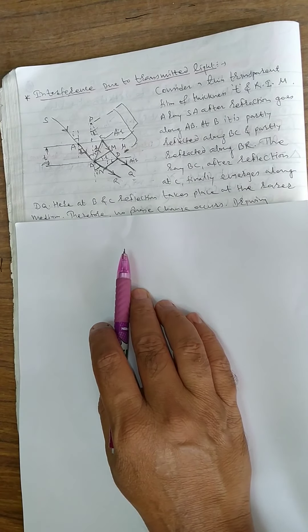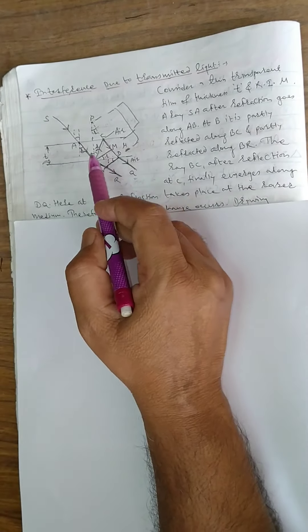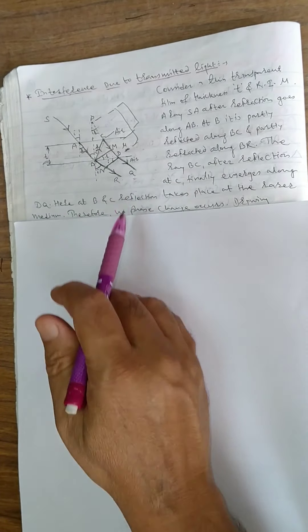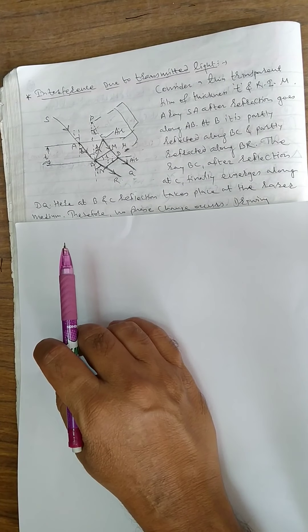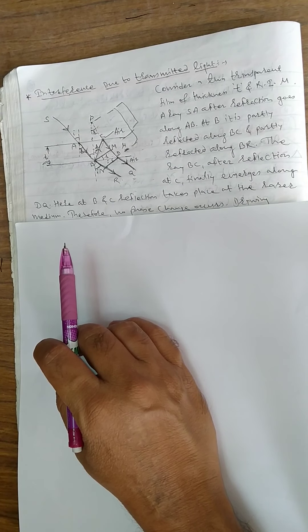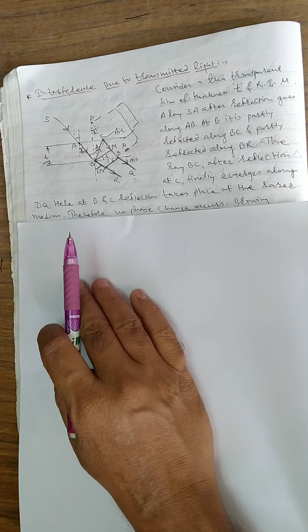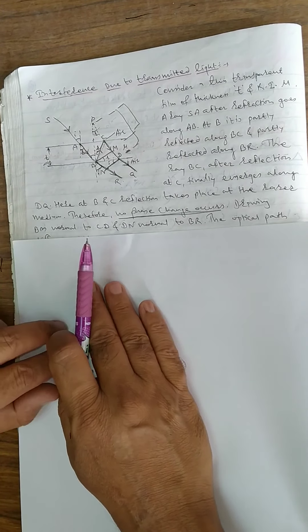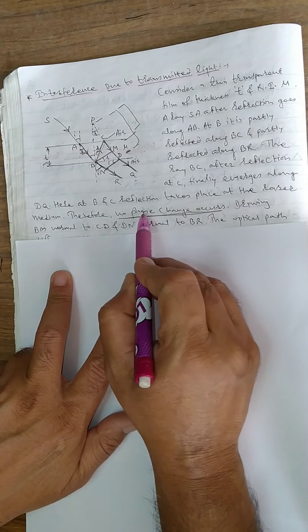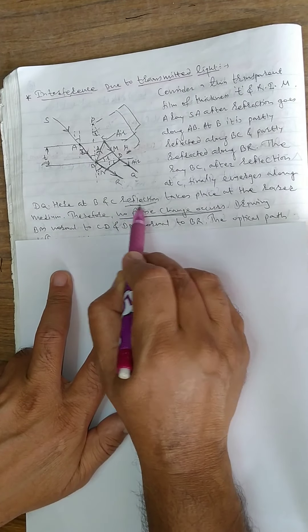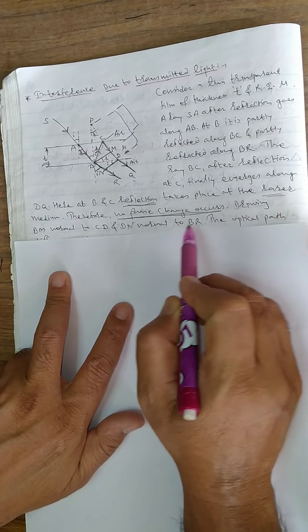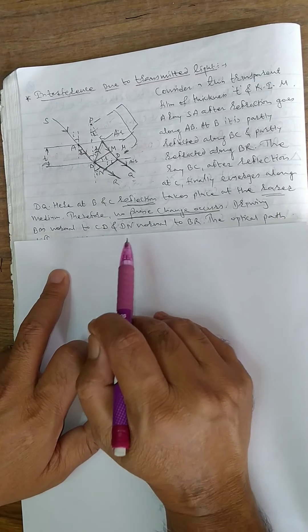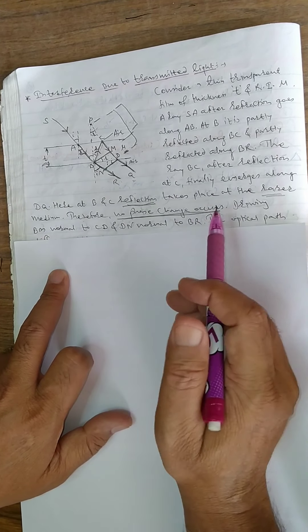Observe carefully what happens at points B and C. At B and C, reflection takes place at the rarer medium. When there is reflection at a rarer medium, there is no phase change. This means the rays travel in the same phase.